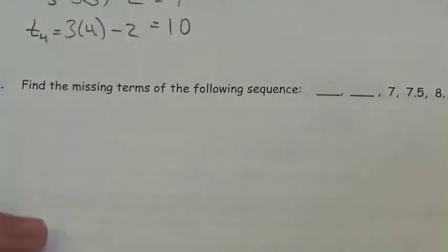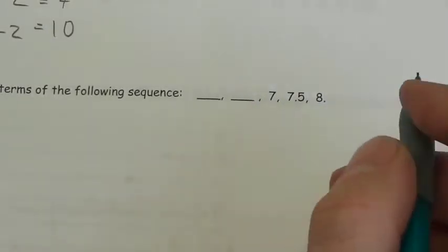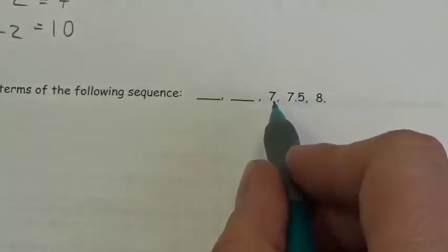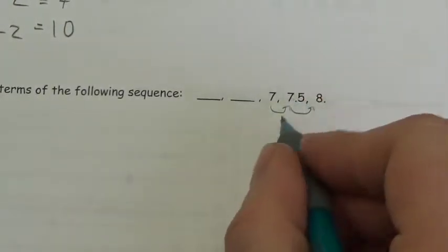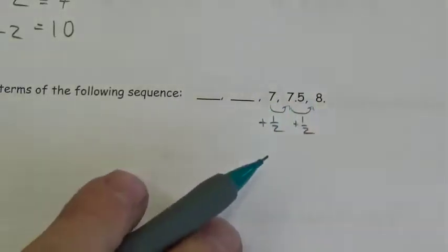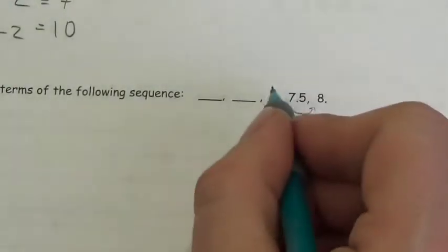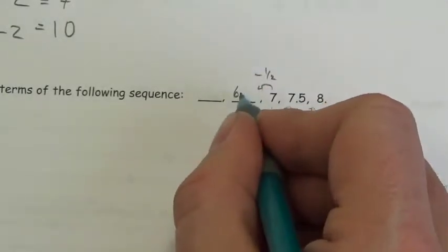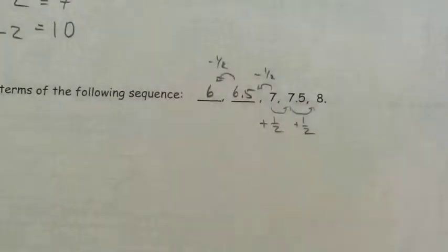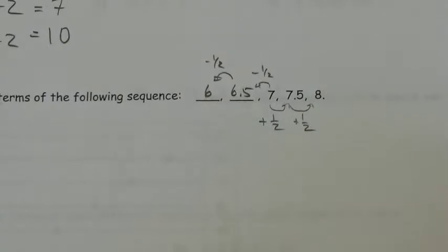Find the missing terms: blank, blank, 7, 7.5, 8. Here you don't want to put in more effort than is needed. Going from term to term out here, I'm adding a half each time. So going backwards, I just subtract a half: 7 minus 0.5 equals 6.5, and 6.5 minus 0.5 equals 6. That's all you have to do for a question like that — please don't do more work than necessary.